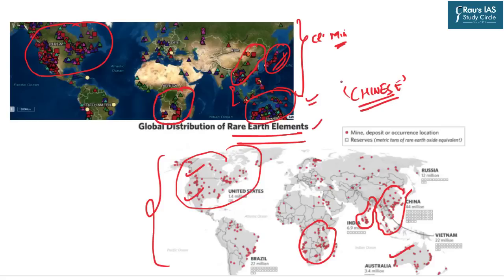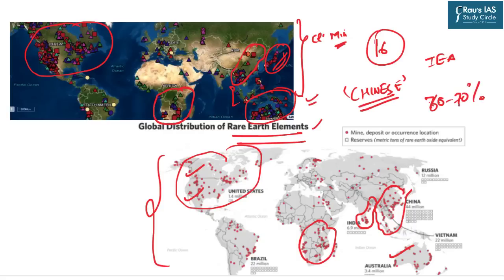According to the 2019 USGS Mineral Commodity Summaries report, China is the world's largest producer of 16 critical minerals. According to the International Energy Agency, China is responsible for some 60–70% of global production of cobalt and rare earth elements. The level of concentration for certain minerals like lithium is up to 90% with China. Importantly, in terms of available quantity, China is not very dominant — but when it comes to production, processing, and selling, China is the leading country.